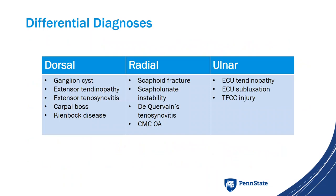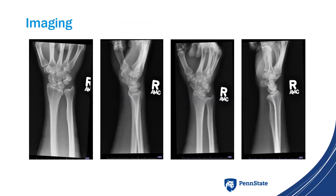The differential I was mostly considering was a ganglion cyst versus tendinopathy or tenosynovitis given the swelling. There are other things to consider based on where your exam leads you, and many things on these differential lists can be seen on ultrasound, which is helpful.